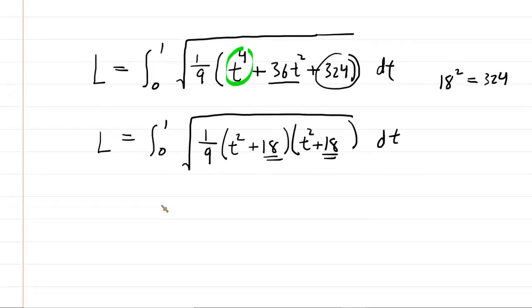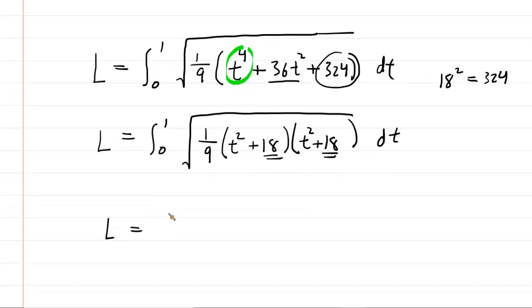And in fact, we can compact this into the following format. So, we have the square root of 1/9. And since we have a pair of identical t squared plus 18s, we can actually write that as t squared plus 18 squared, like so.